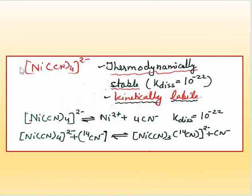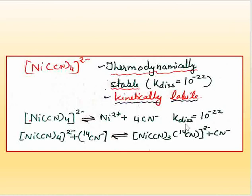Here is another example: the tetracyano complex. This is thermodynamically stable because the dissociation constant is 10 to the power minus 22, meaning the formation constant is very high — so this is a thermodynamically stable compound. But it is kinetically labile. This is the example of Ni(CN)4: the dissociation constant is very low, confirming thermodynamic stability, yet it is a kinetically labile complex.